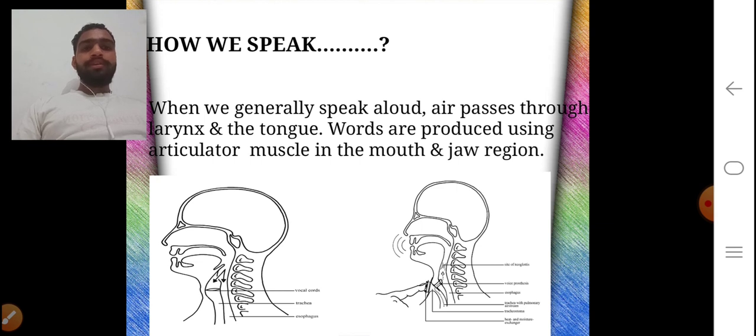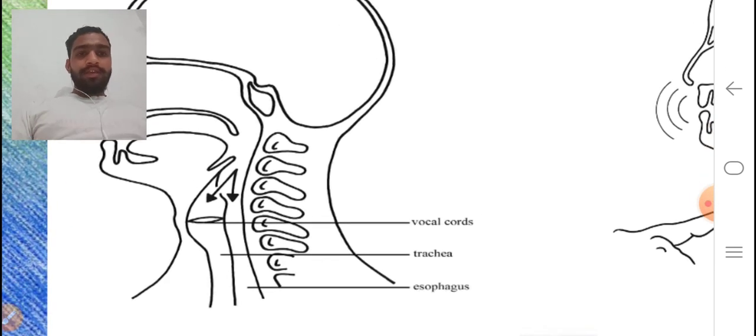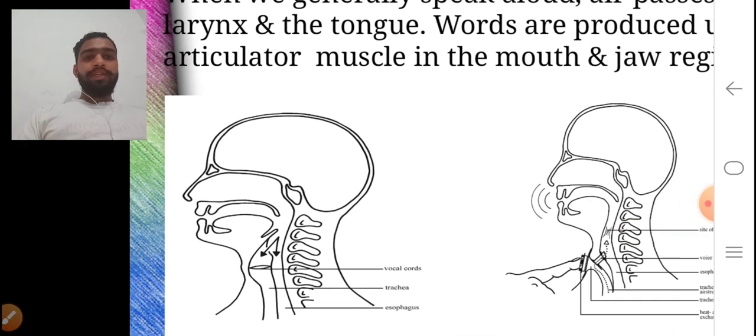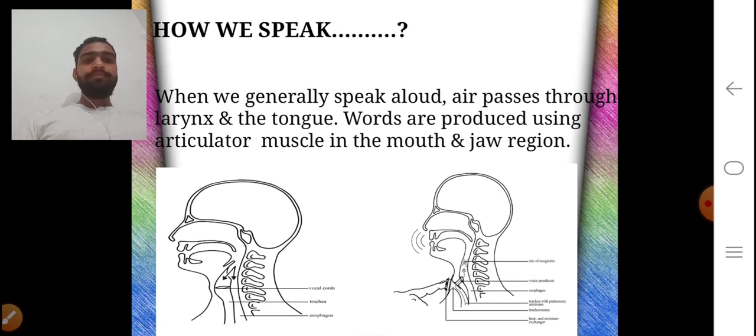As we know how we speak, when we generally speak aloud, air passes through our larynx and the tongue. Words are produced using articulator muscles in mouth and jaw. As we see in this diagram, our vocal cord, trachea and esophagus play an important role in producing a sound.